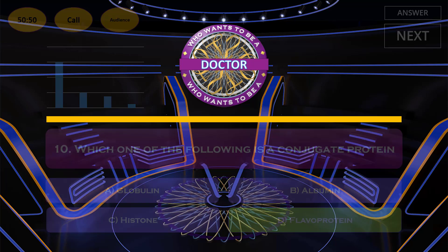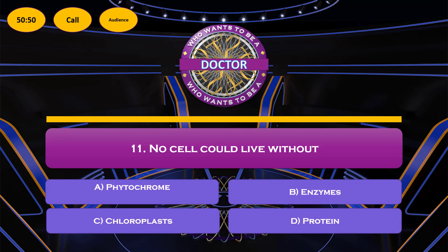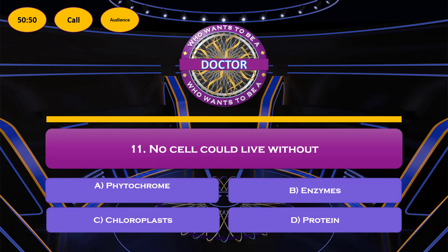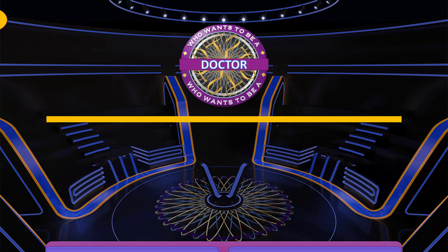Next question: no cell could live without — option A: phytochrome; option B: enzyme; option C: chloroplast; option D: protein. No cell could live without protein, because proteins are the building blocks of the body. So option D is the correct answer.